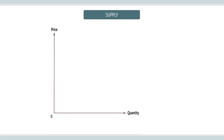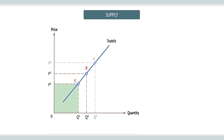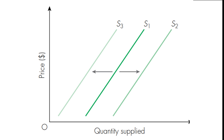Let's have a look at the supply curve. When looking at movements along the supply curve, we again have extension and contraction. When there's a fall in price, this leads to a contraction; and when there's a rise in price, this leads to an extension. For shifts: an increase in supply leads to a shift to the right, while a decrease in supply leads to a shift to the left.